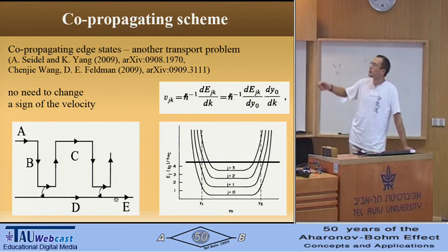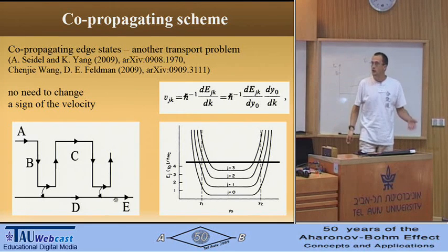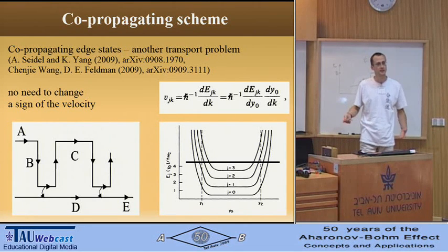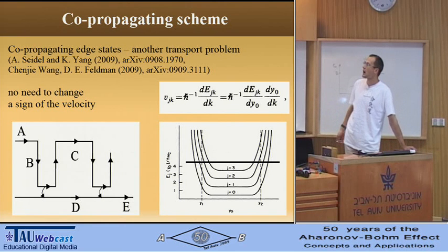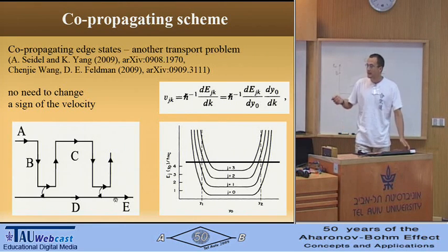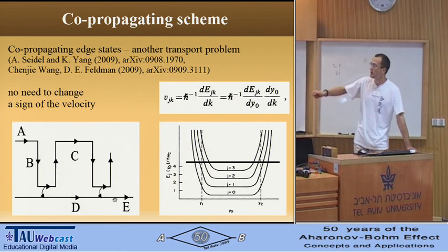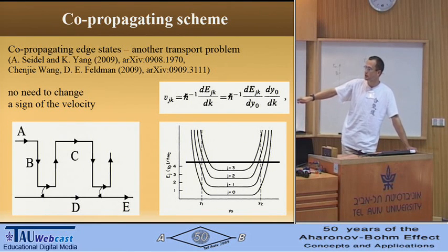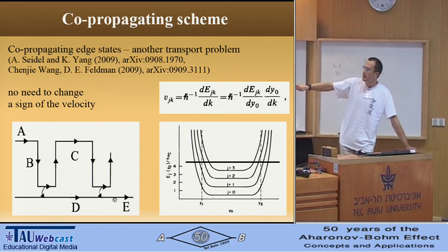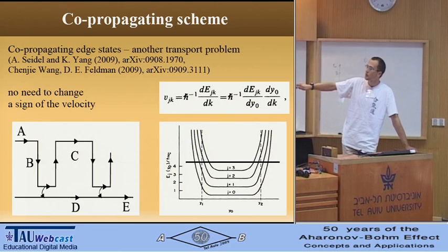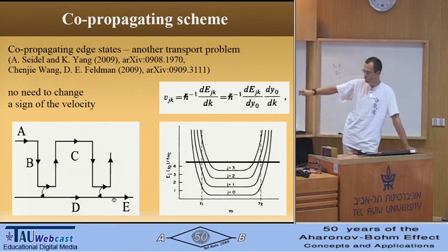This problem — transport between co-propagating edge states — is something different. In this transport, we should work with edge states which are at the same sample edge. And if we transfer an electron between them, we should not change the sign of the group velocity. There are some theoretical publications which calculate different transport characteristics in this situation and compare with counter-propagation. To make an interferometer, I should take a sample edge where one edge state goes along it and another edge state, independently contacted, is fired away. Then bring two edge states into interaction in some small region.